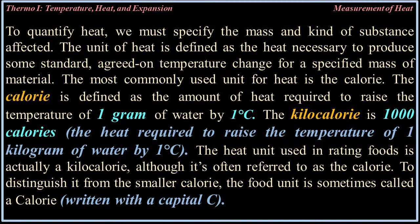To quantify heat, we must specify the mass and kind of substance affected. The unit of heat is defined as the heat necessary to produce some standard agreed-on temperature change for a specified mass of material. The most commonly used unit for heat is the calorie — defined as the amount of heat required to raise the temperature of one gram of water by one degree Celsius. The kilocalorie is 1,000 calories — the heat required to raise the temperature of one kilogram of water by one degree Celsius. The heat unit used in rating foods is actually a kilocalorie, sometimes written with a capital C.